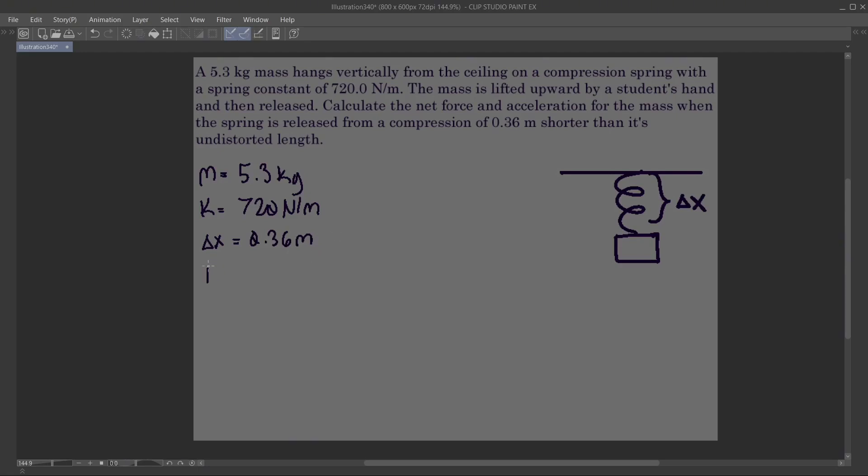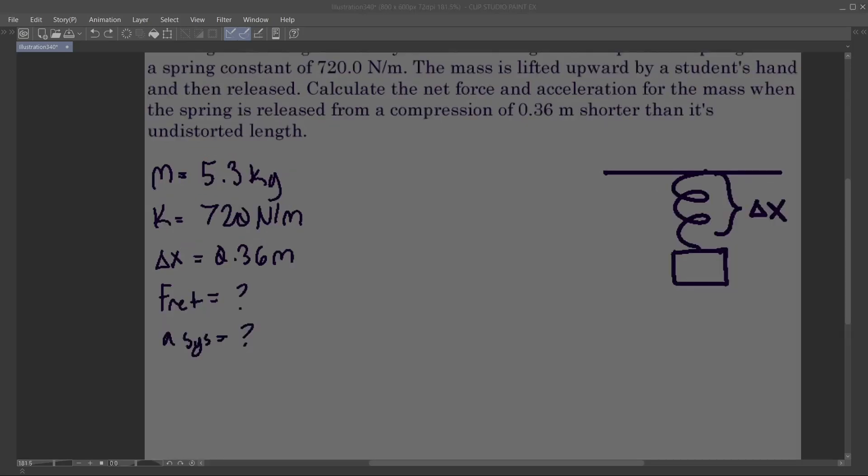And what we're trying to find is F net and acceleration of the system. In order to find F net, we need to determine all the values of all of the forces acting on this block and the total of that.